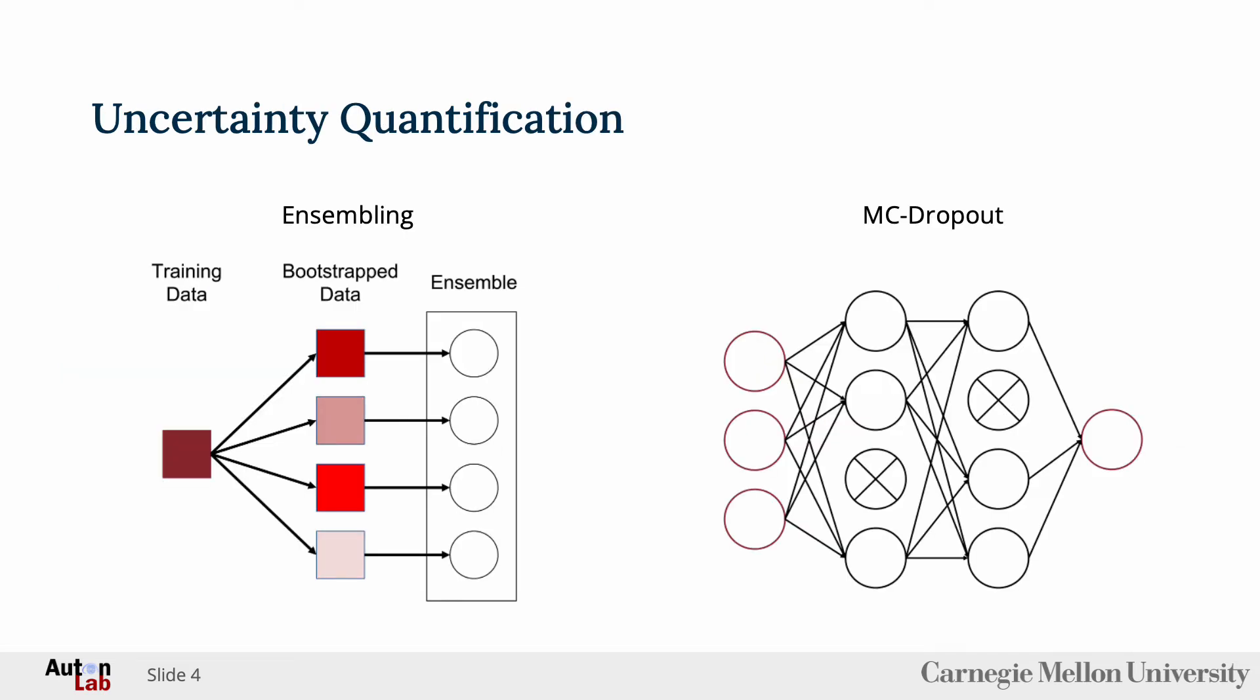There are two methods of uncertainty quantification that we have focused on. The first one is ensembling. Ensembling involves bootstrapping datasets from the original dataset, then using each bootstrap dataset to train a single model. These models then form an ensemble. By aggregating the outputs of each model in an ensemble, we can quantify the uncertainty of the model.